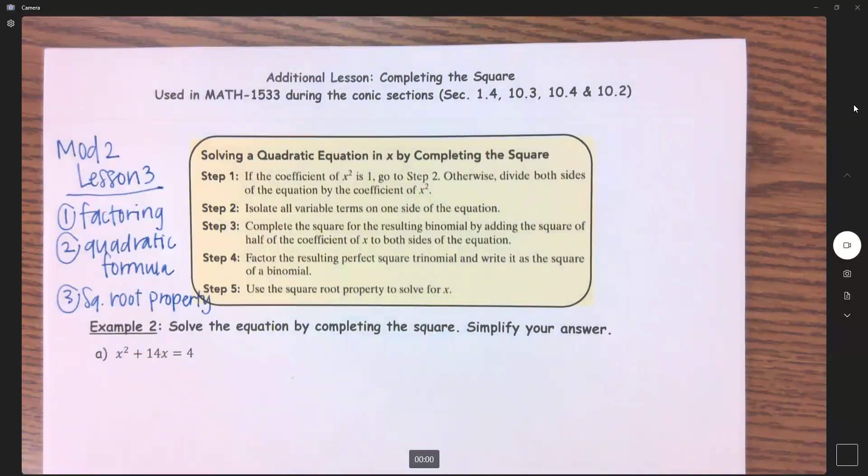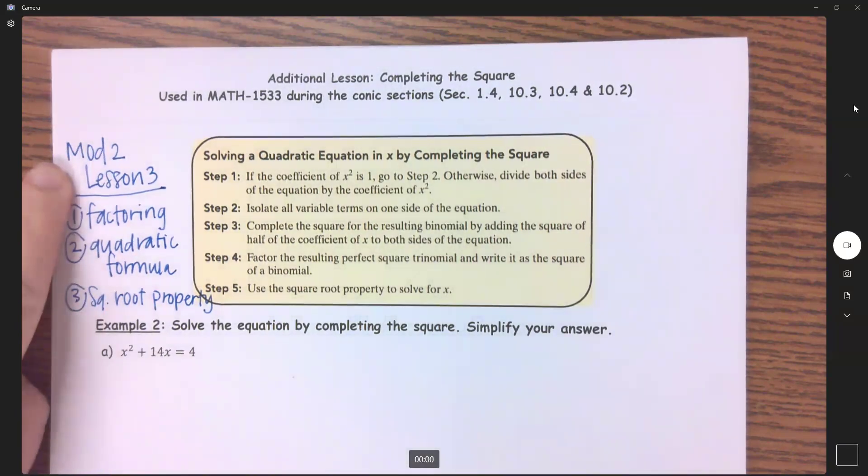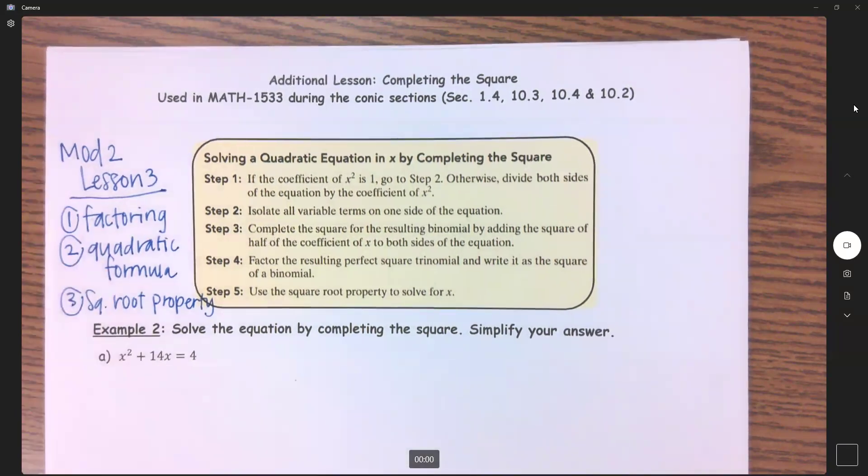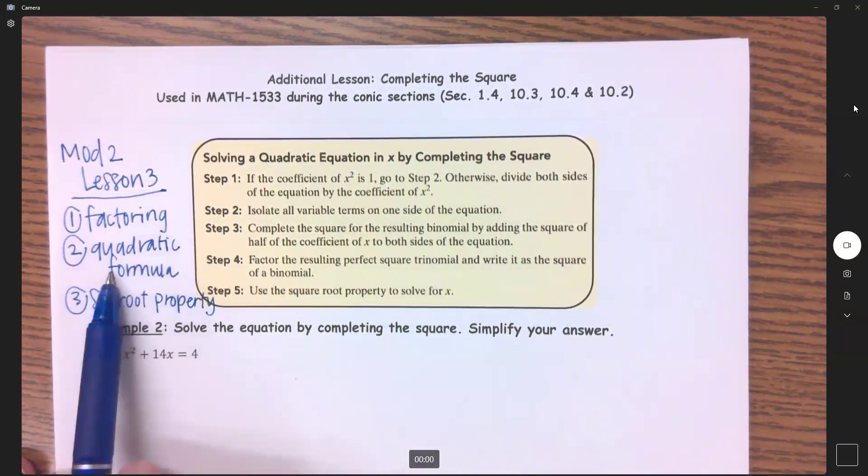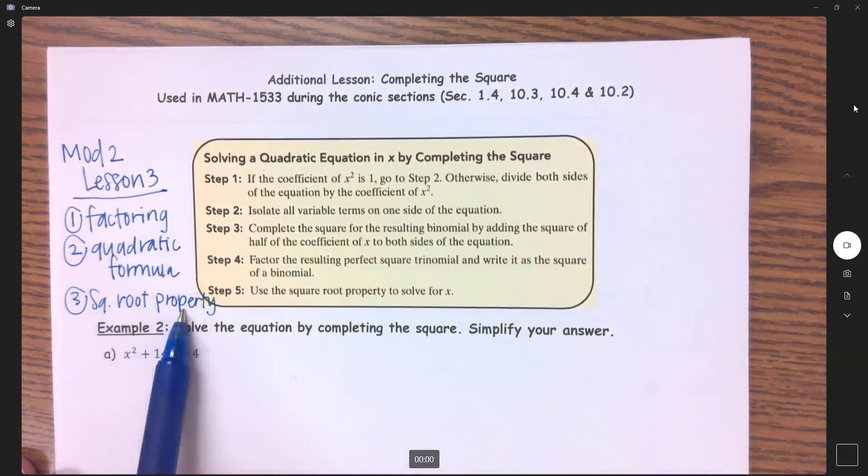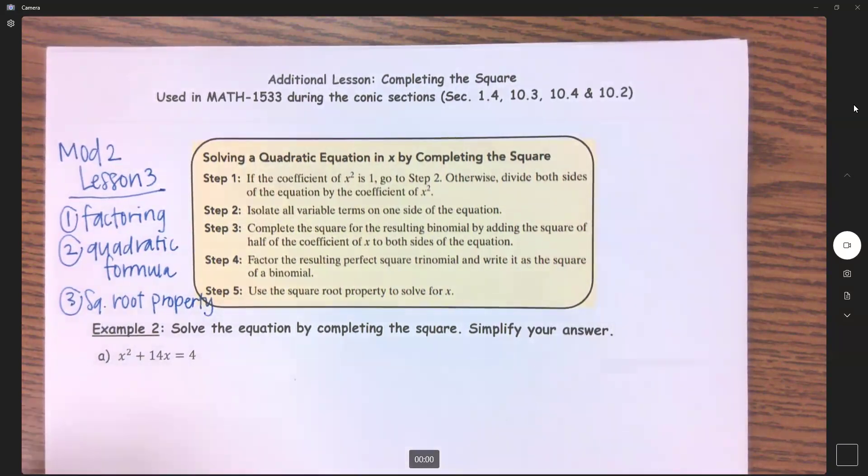Before I actually get into this video on completing the square, I want to kind of back up and explain what we're doing. Completing the square is another way to solve a quadratic equation. In Module 2 Lesson 3, we went over three ways already: solving by factoring, by the quadratic formula, and by the square root property or method. This is a fourth way to solve a quadratic.